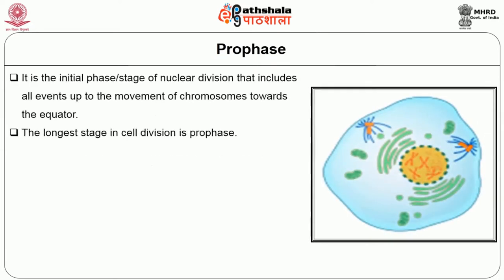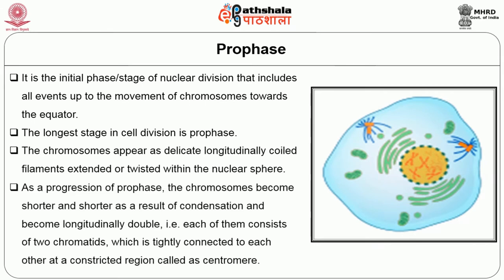Prophase triggers chromosome condensation, spindle assembly and nuclear envelope breakdown. 'Pro' means before, 'phases' means appearance — it is the initial stage of nuclear division including all events up to the movement of chromosomes towards the equator, and it is the longest stage in cell division. During this phase, chromosomes appear as delicate longitudinally coiled filaments within the nucleus. As prophase progresses, chromosomes become shorter and shorter through condensation and become longitudinally double — each consisting of two chromatids tightly connected at a constricted region called the centromere.